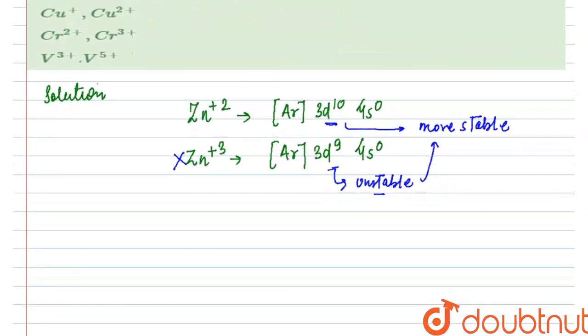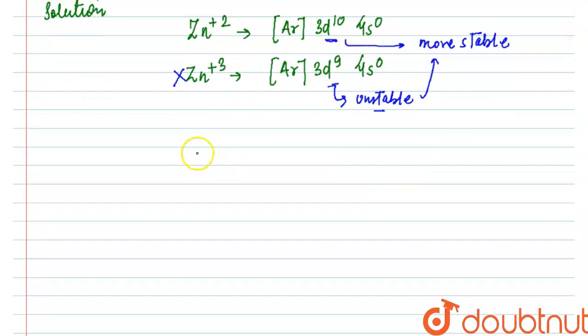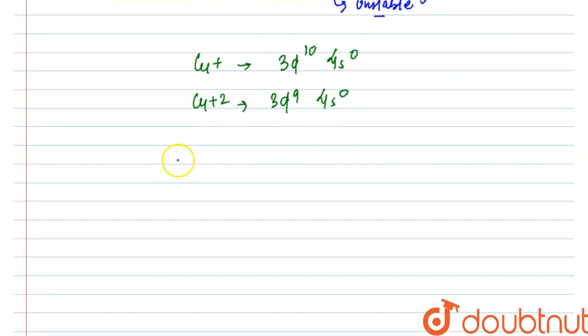So we have Cu+ and Cu2+. Cu+ or cuprous ion will have the electronic configuration as [Ar] 3d10 4s0, and Cu2+ will have [Ar] 3d9 4s0. But here what happens is that in aqueous solution, hydration energy is something that changes the game.